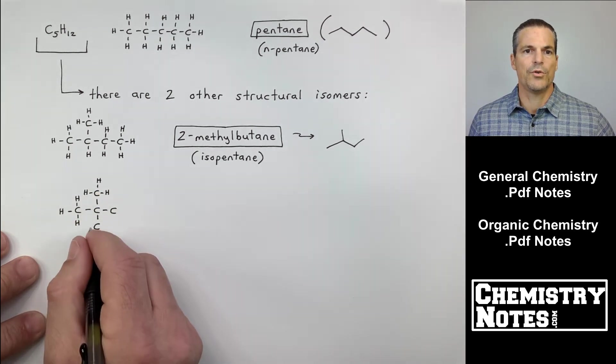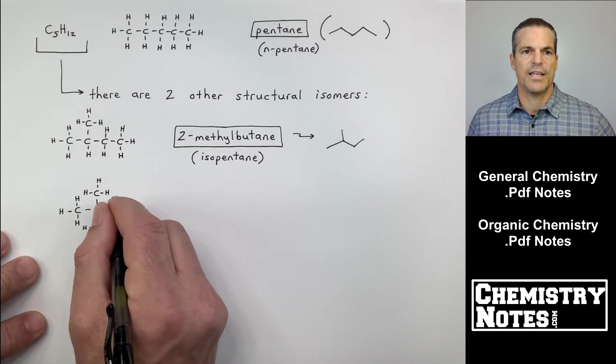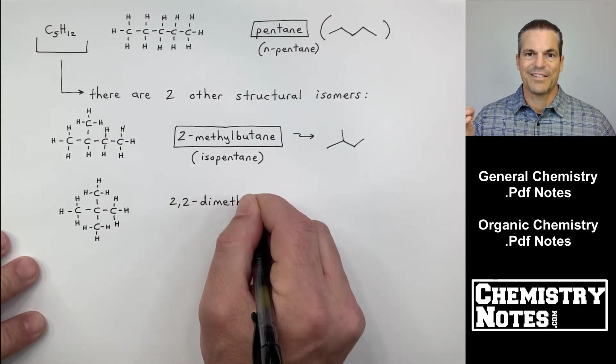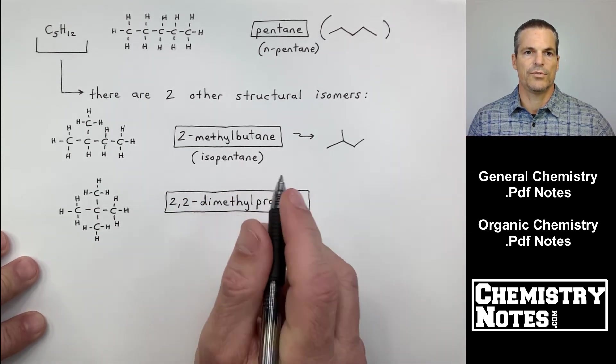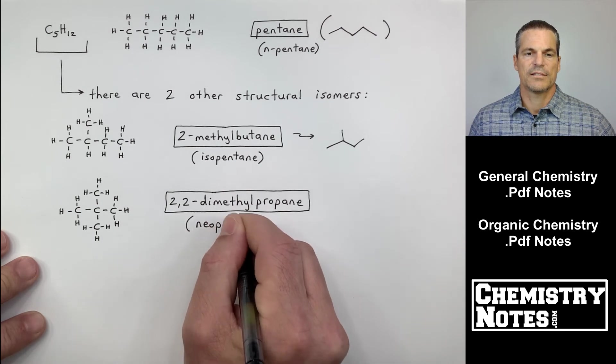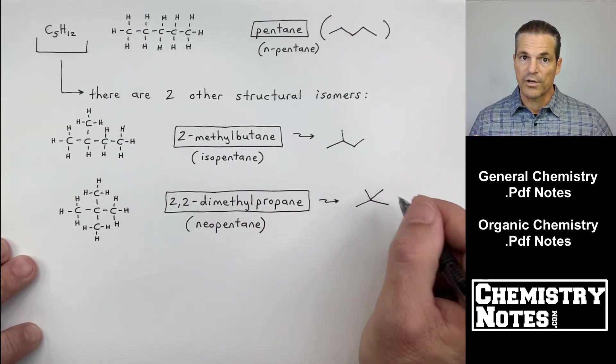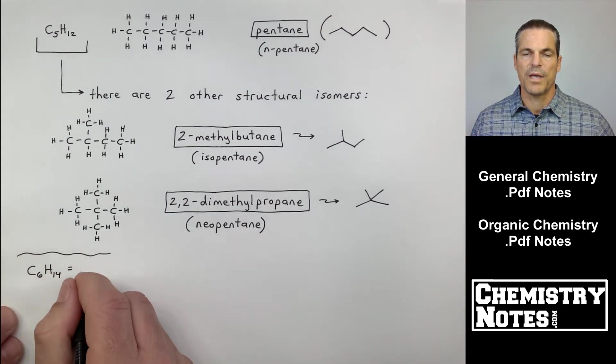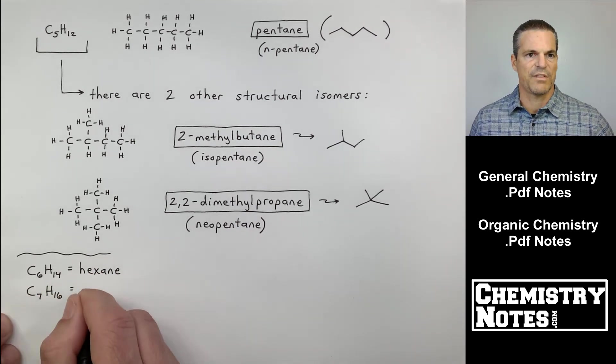The one in the middle is 2-methylbutane. Common name is isopentane. And I've got the Kekulé structure or the kind of the stick figure on the far right. The next one is 2,2-dimethylpropane. Has a common name of neopentane. And again, we're going to learn how to name those. You see the boxes with the names? 2-methylbutane, 2,2-dimethylpropane. We're going to learn how to name alkanes in video number two, which is after this.